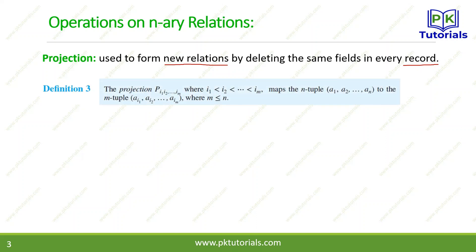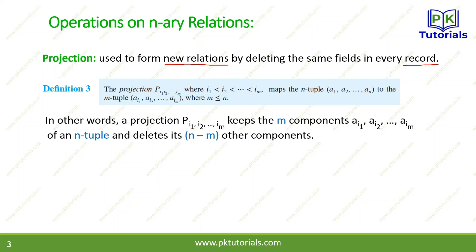The definition of projection: P_{i1, i2, ..., im} where i1 < i2 < ... < im. The projection operator P maps the N-tuple (a1, a2, ..., an) to the M-tuple, where M is less than N. In other words, a projection P_{i1,...,im} keeps the M components of the N-tuple and deletes the remaining N minus M components that we do not need.